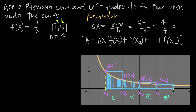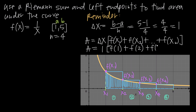For our area formula, all we need is to take delta x — which we found equals 1 — and multiply it by the sum of all the function values: f(x₁) + f(x₂) + f(x₃) + f(x₄). Plugging in, area = 1 · [f(1) + f(2) + f(3) + f(4)], and that's our last left endpoint.